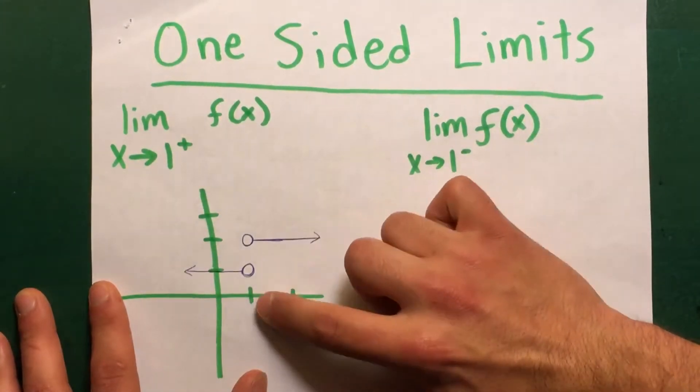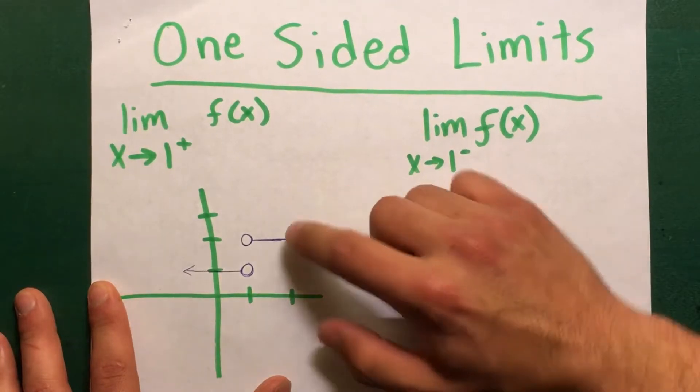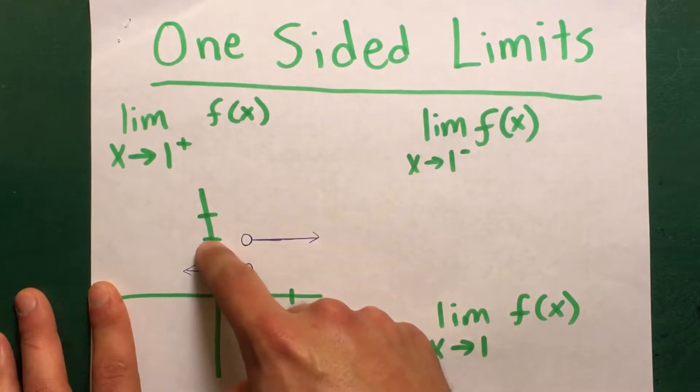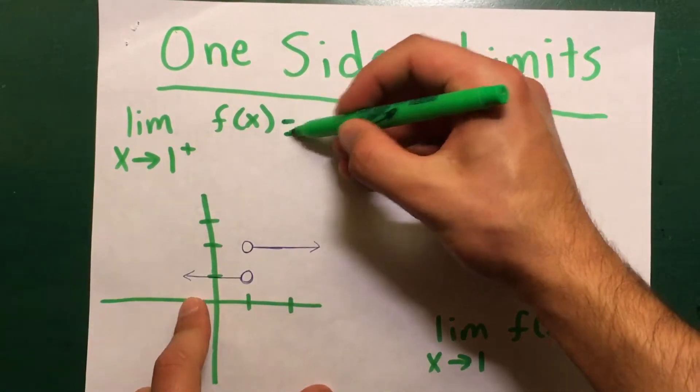This function has the values when we're coming from the right. So as x approaches 1 from the right, it's approaching this number which is 2. So the answer for this one would be 2.